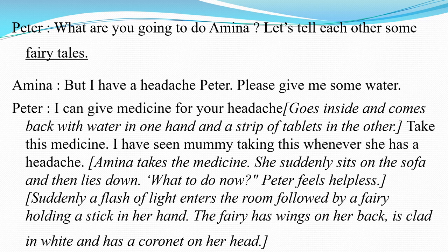Amina tells him that she is having a severe headache and is in need of some water. Peter tells his sister that he can give some medicine for her. He goes inside and brings some medicine, telling her that he had seen their mummy taking this medicine. Amina takes the medicine, suddenly sits on the sofa and then lies down. Peter feels helpless. At this time, a fairy holding a stick in her hand enters. The fairy has wings on her back, is dressed in white, and has a small crown on her head.